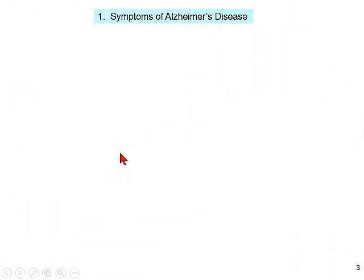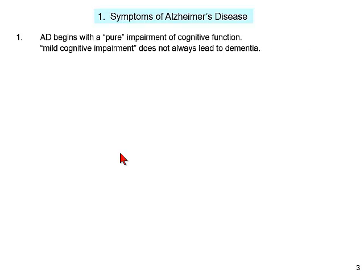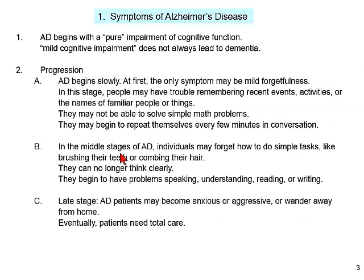First off is Alzheimer's. The typical case of Alzheimer's usually begins with a rather pure impairment of a person's cognitive ability. Mild cognitive impairment does not always lead to a dementia or a more severe case of Alzheimer's, but there is a progression. First, the only symptom is forgetfulness — people may have trouble remembering recent events, activities, or names of familiar people or things. Maybe they can't do simple math problems, and they repeat themselves every few minutes in conversation.